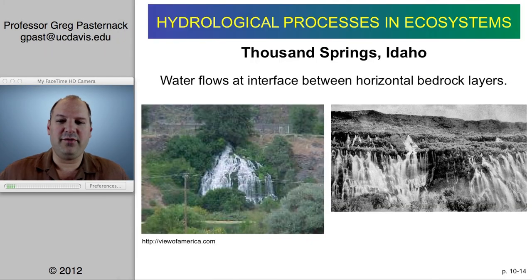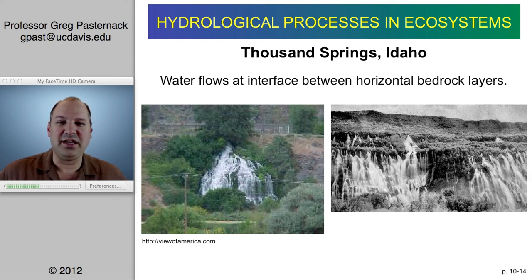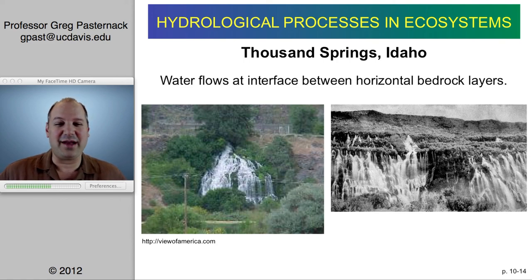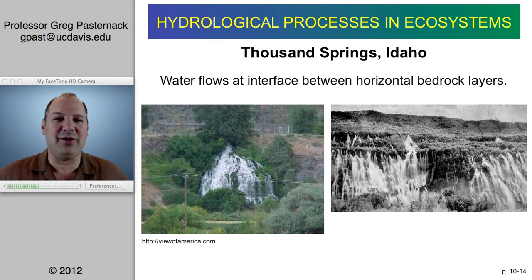My favorite example of a slope wetland is in Thousand Springs, Idaho. As the name implies, water is flowing at one of those interfaces between horizontal bedrock layers. As a college student I had a chance to drive to Idaho and tried to see it, but when I got there there wasn't any water flowing. You can see the contrast between the historical photo and what it must have looked like compared to a more recent photo.